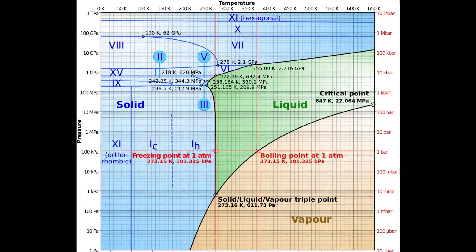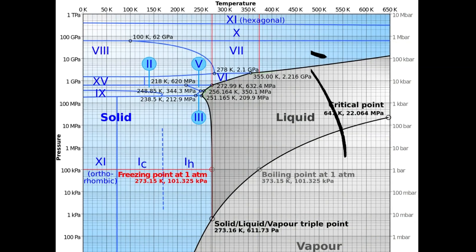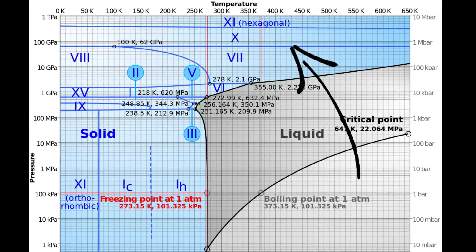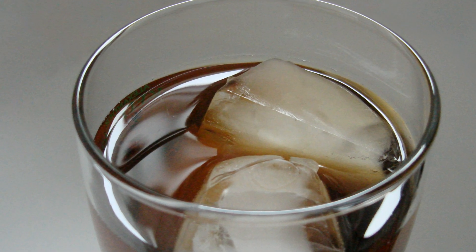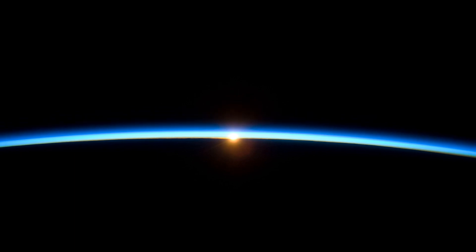For example, if you apply enough pressure, you can create hot ice — boiling hot ice, as you can see here. Imagine that, ice that can burn you. But don't worry about someone putting a boiling hot ice cube in your drink, because you would be crushed by thousands of times more pressure than our atmosphere can provide.